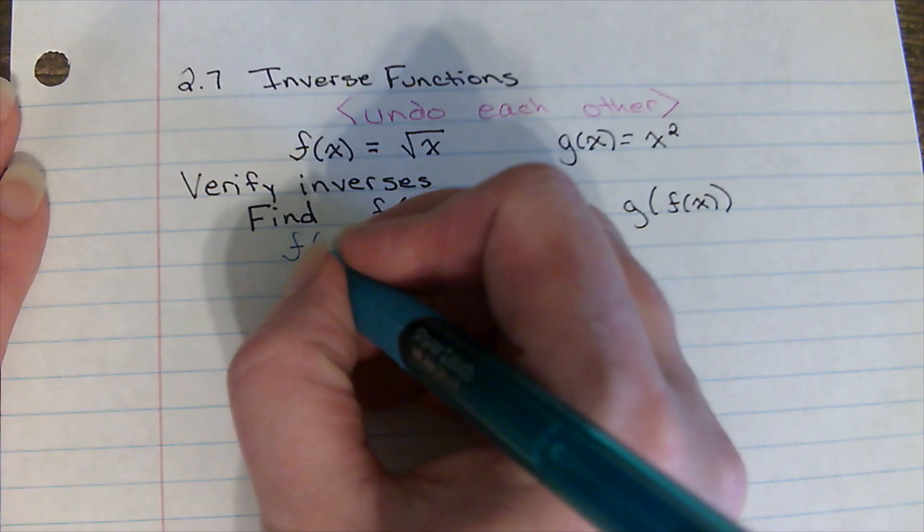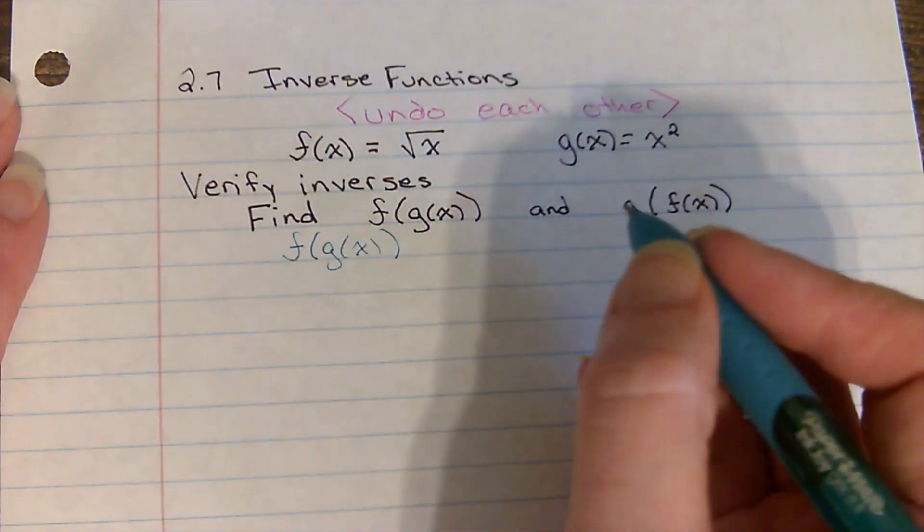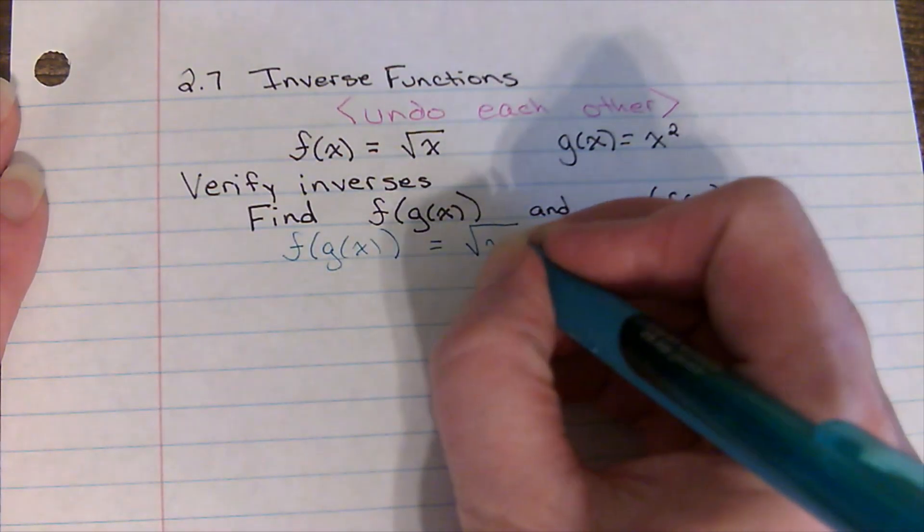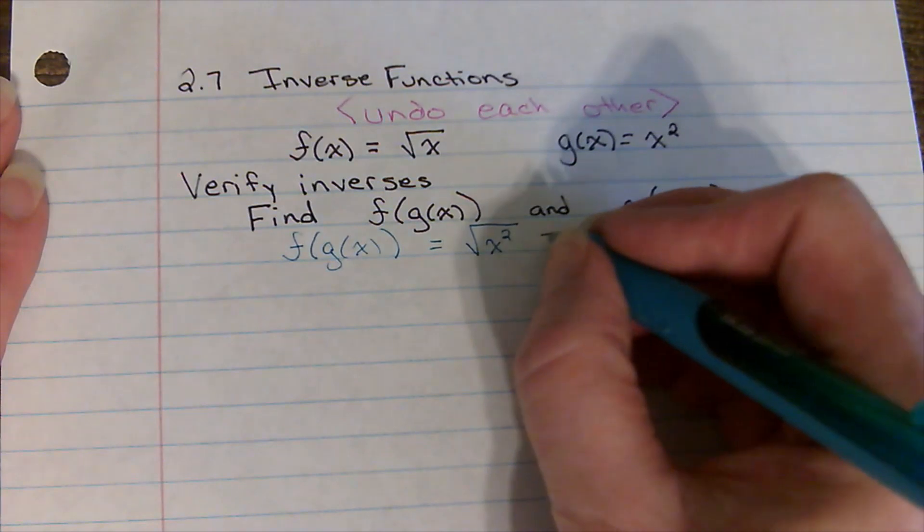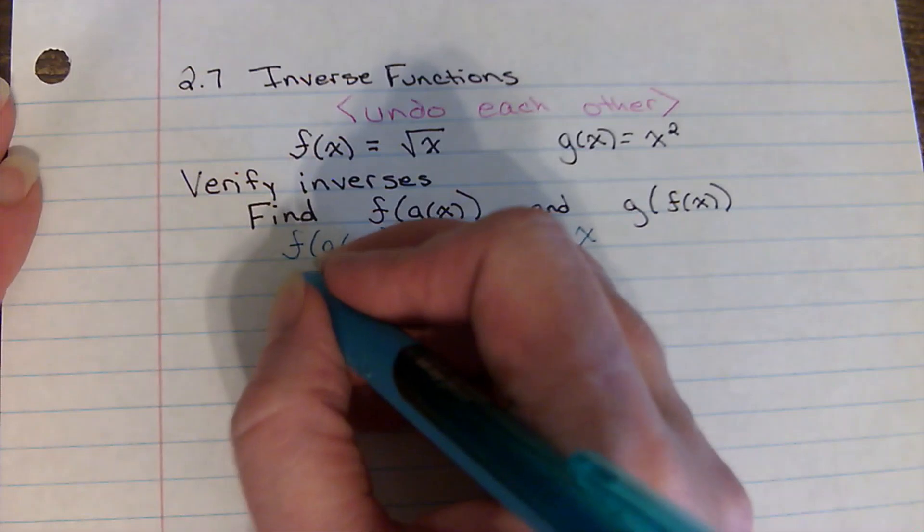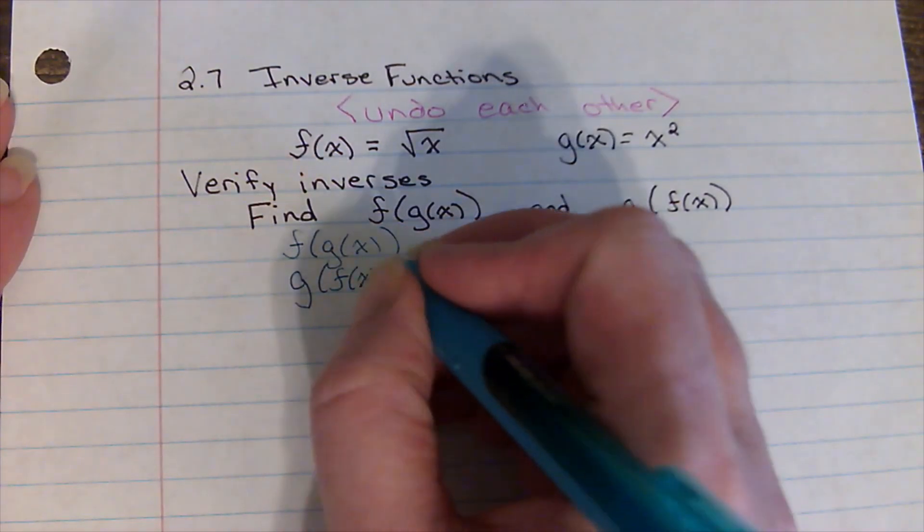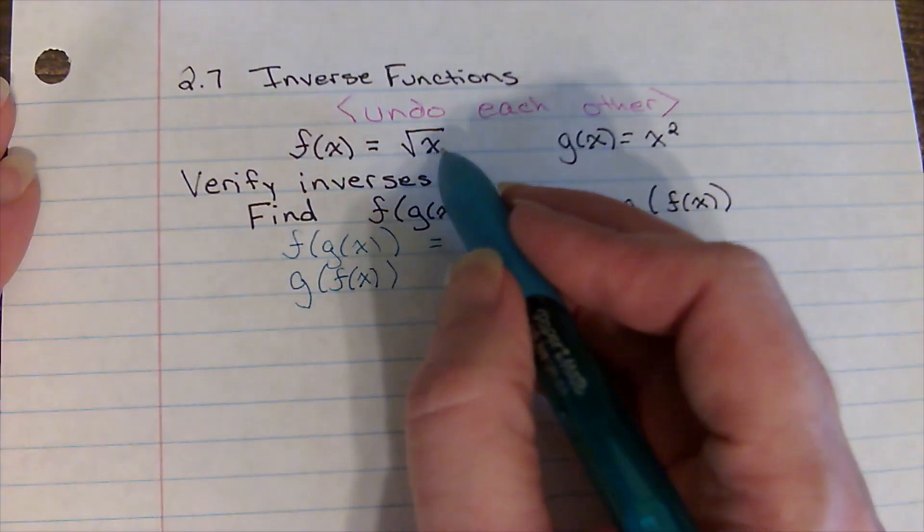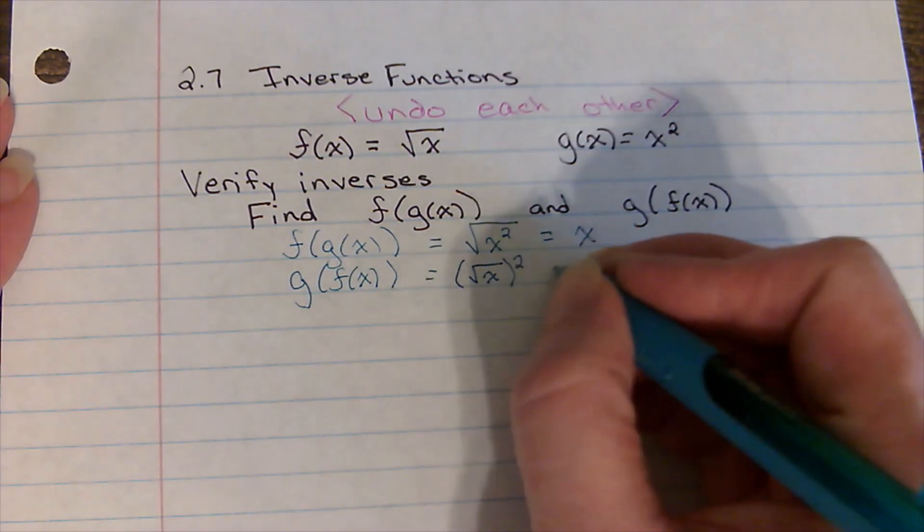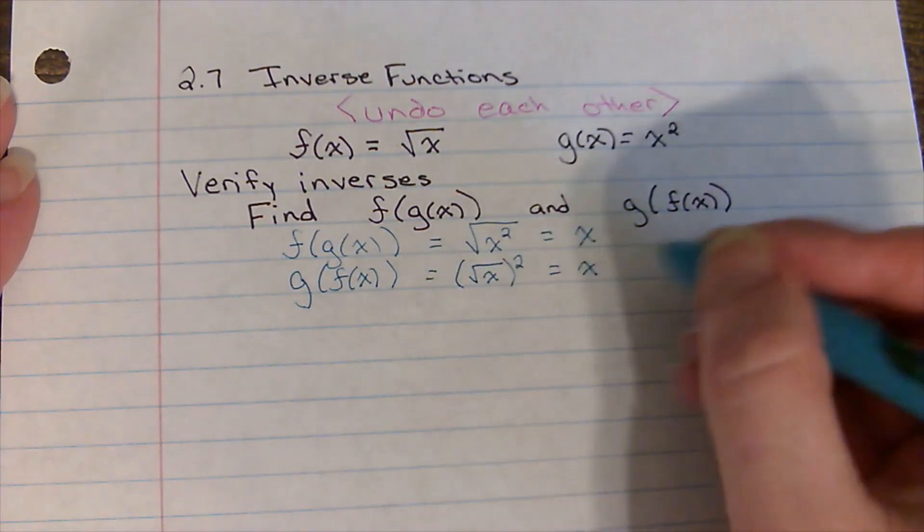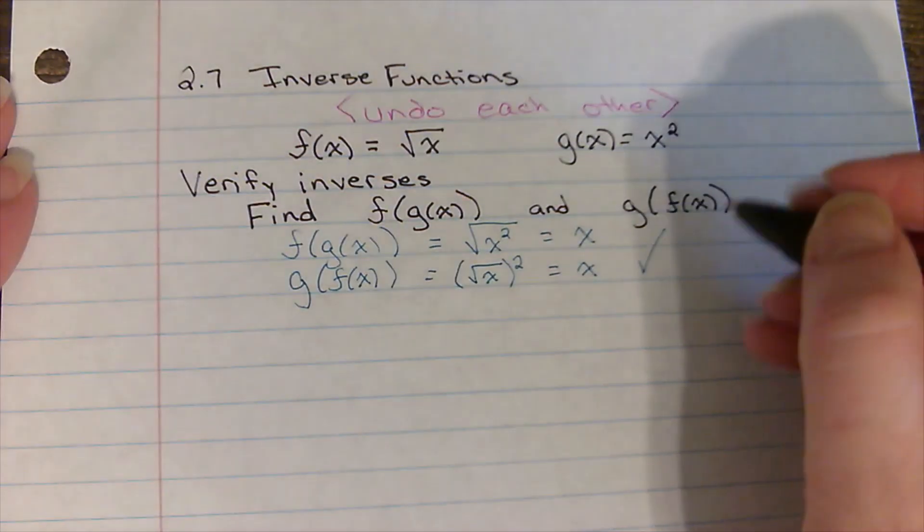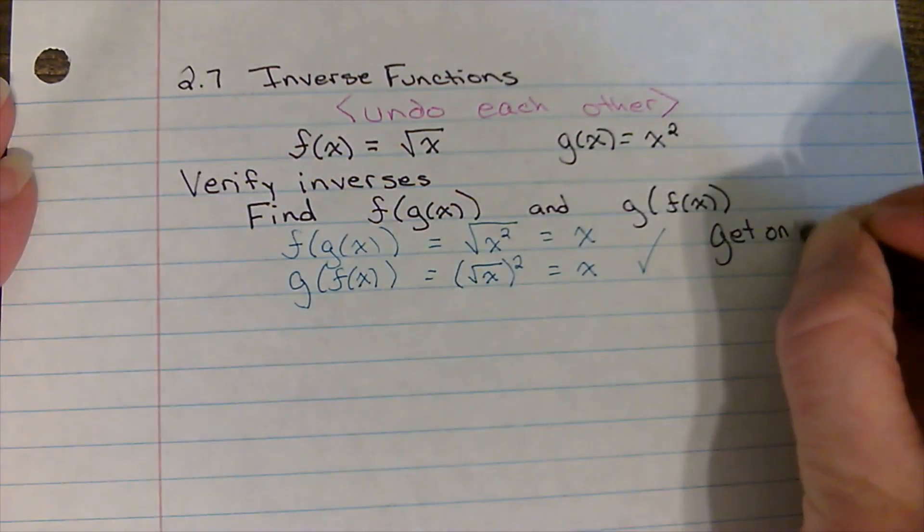That means I'm going to take x squared and plug it in where x was in f. So f of g of x literally means I'm going to take g of x and plug it into f of x. So that'd be the square root of x squared, and I just get x back. The other direction, if I take f of x and plug it into g of x, so that would be the square root of x squared, I get x back. So if we find f of g of x and g of f of x and get only x back.